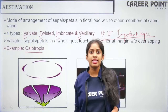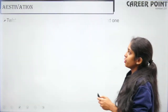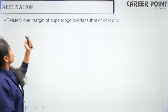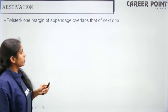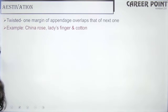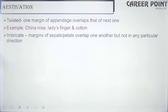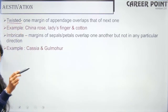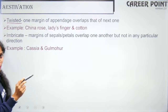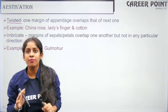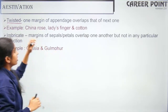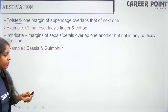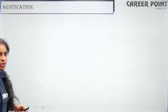The second type is twisted aestivation: one margin of an appendage overlaps the next one in a particular order. Examples: china rose, lady's finger, cotton. The third type is imbricate: the whorls overlap each other in a random or oblique order — not a particular pattern. Examples: cassia and gulmohar.